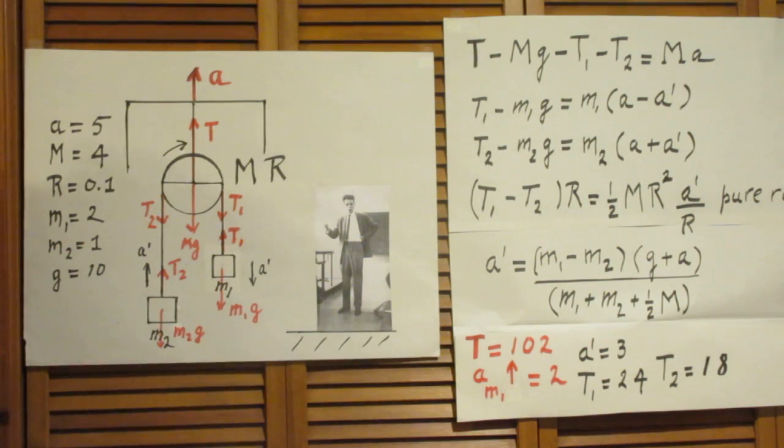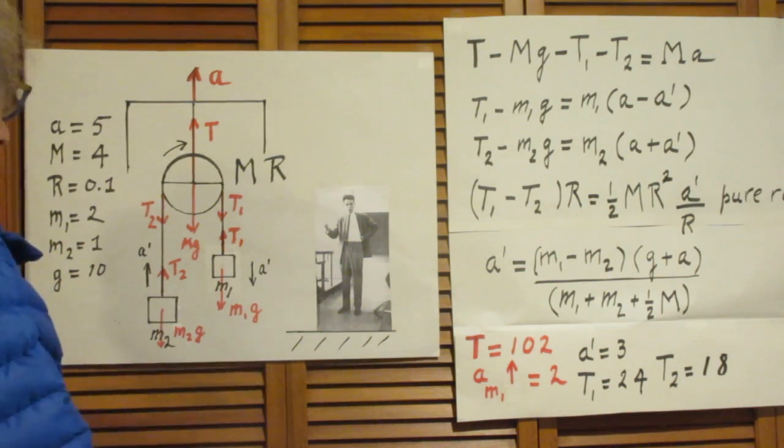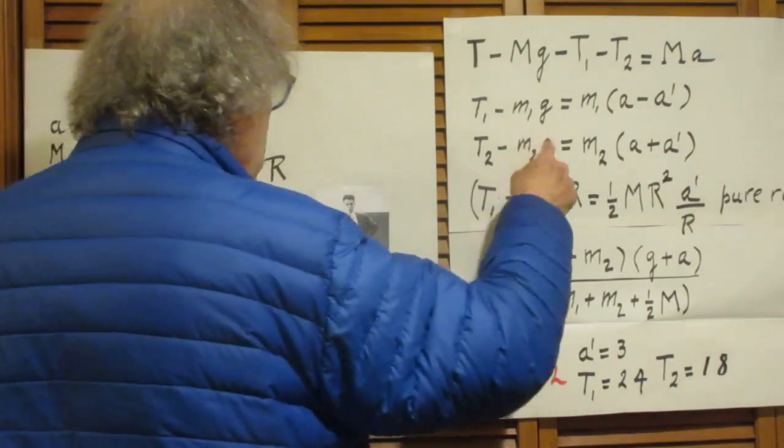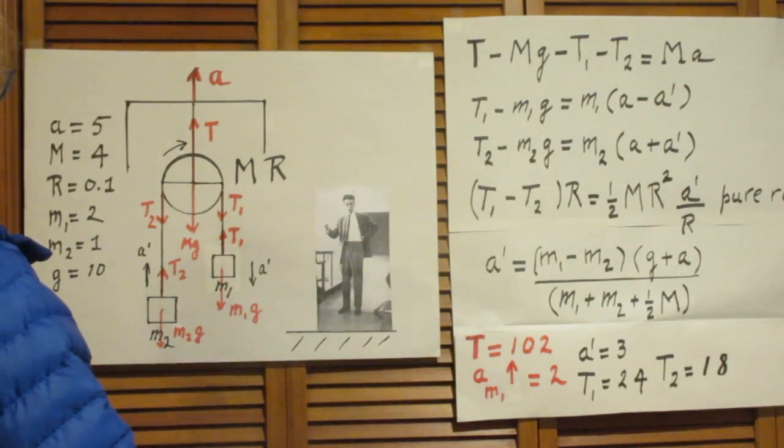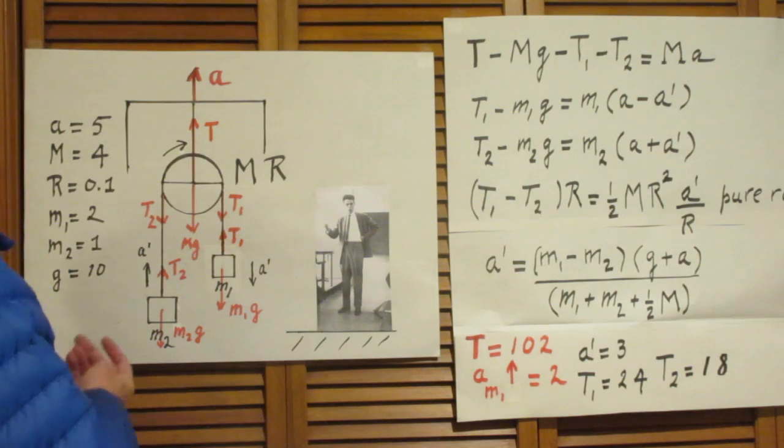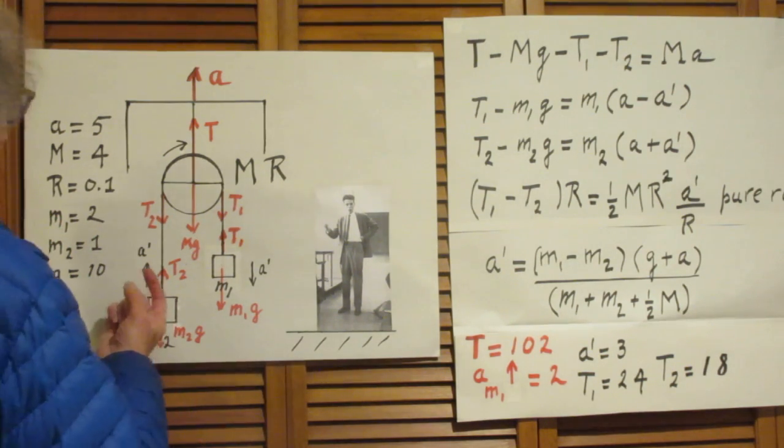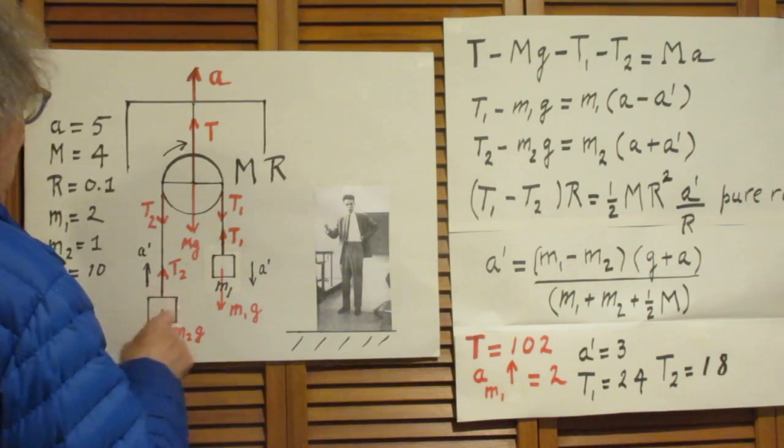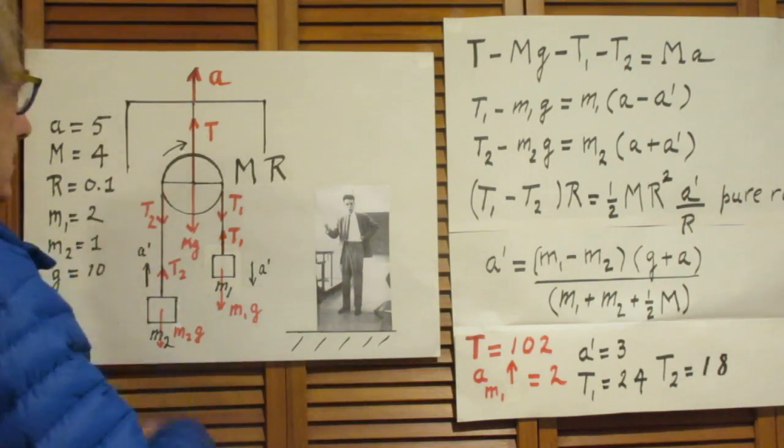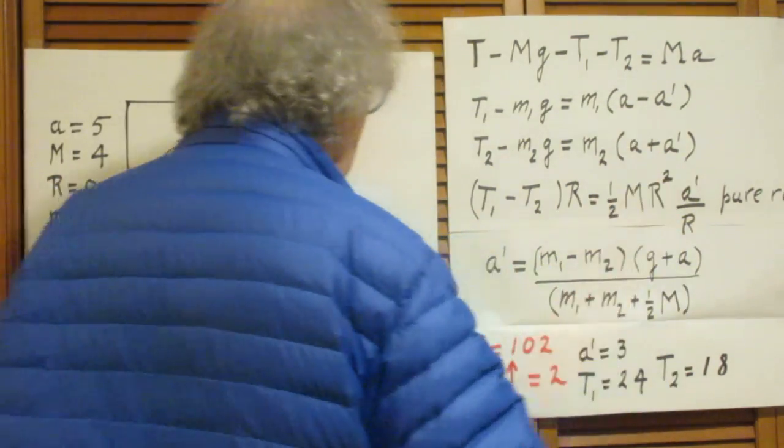Now we go to this one. T2 is upwards, m2g downwards minus sign, and that is m2 times the acceleration of this object, but that is a' plus a. So now you see a' plus a.